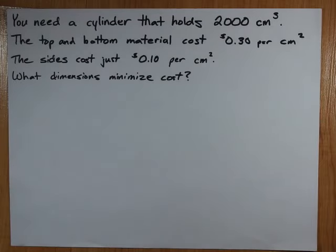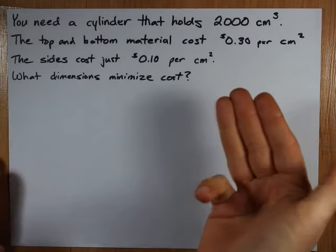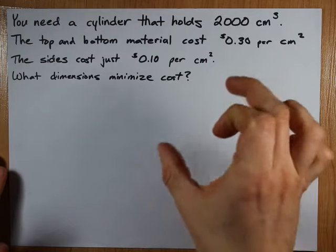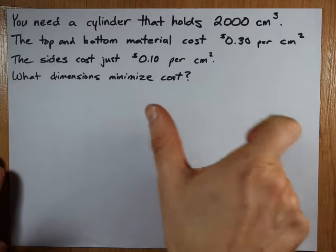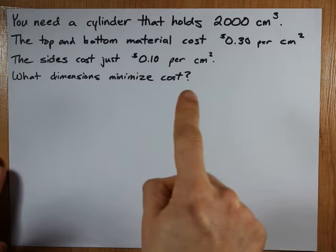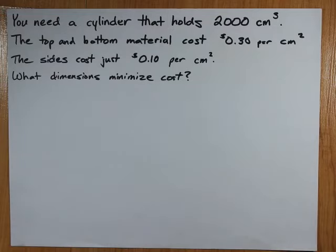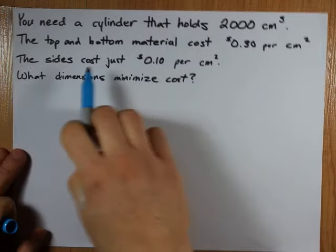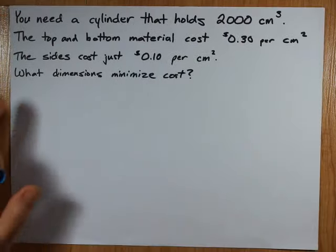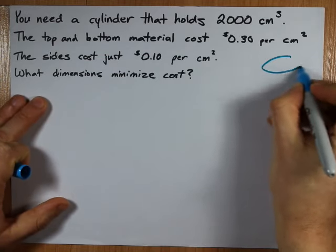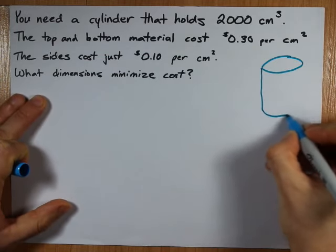Now you might already realize that since the sides cost less, it's better for us to make more height than width, because the larger the top and bottom are, the more expensive it's going to be. I mean, that's true for the sides as well, but a factor of 3 less. So let's draw ourselves a cylinder so we can picture what's going on here.